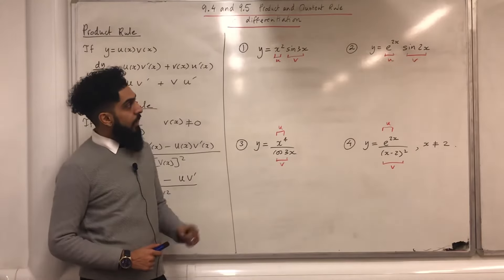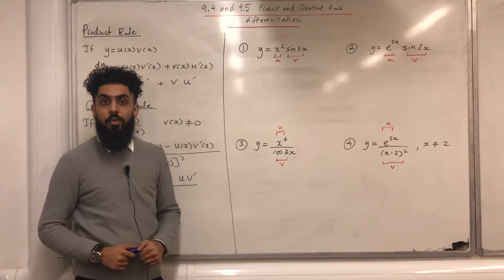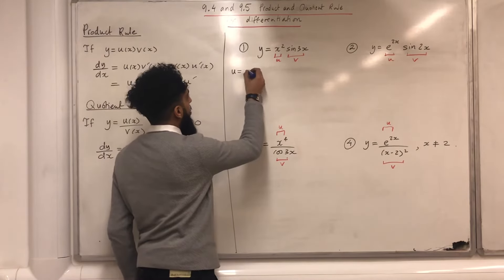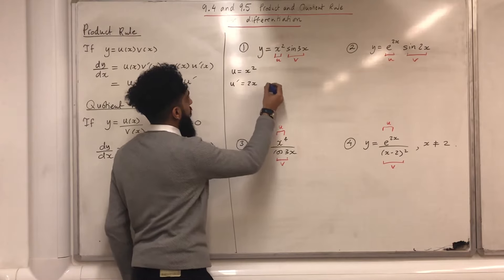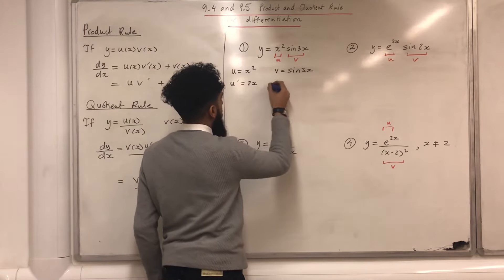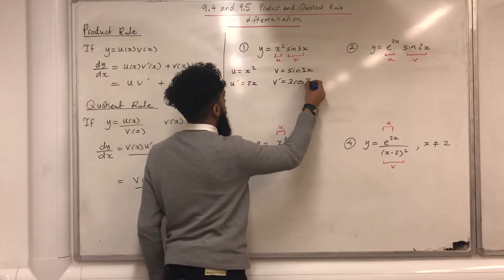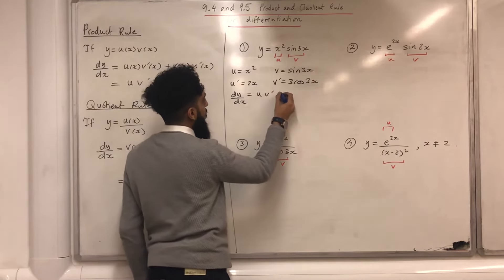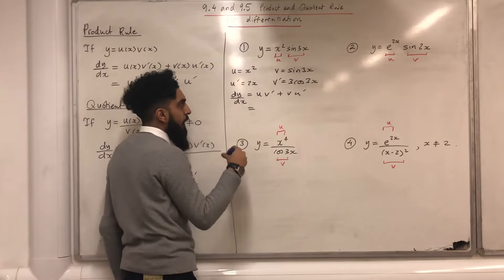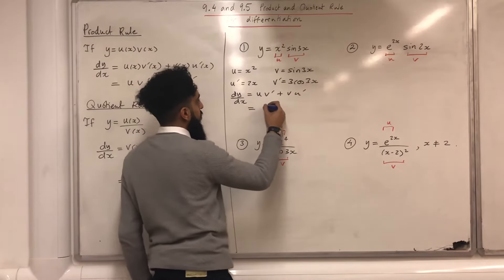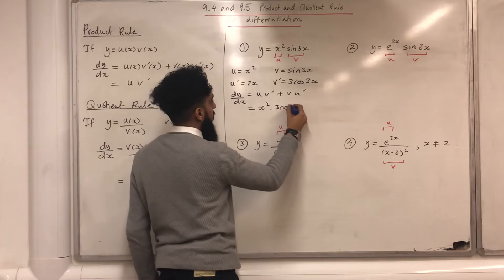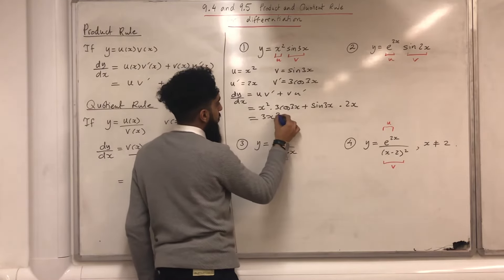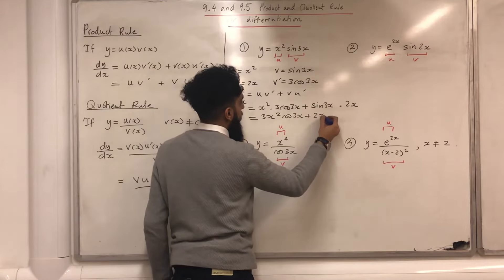I've got four equations on the board and for each I want to find dy/dx. Question number one: y equals x squared multiplied by sin 3x. We have u = x², so u' = 2x. We have v = sin 3x, so v' = 3cos 3x. Using the product rule, dy/dx = u·v' + v·u' = x²·3cos 3x + sin 3x·2x, which simplifies to 3x²cos 3x + 2x sin 3x.